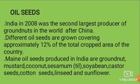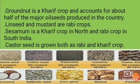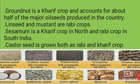India in 2008 was the second largest producer of groundnuts in the world after China. Different oil seeds cover approximately 12 percent of the total cropped area of the country. Main oil seeds produced in India are groundnut, mustard, coconut, sesame, soya bean, castor seeds, cotton seeds, linseed and sunflower. Groundnut is a Kharif crop accounting for about half of the major oil seeds produced. Linseed and mustard are Rabi crops, sesame is a Kharif crop in the north and Rabi in south India, and castor seed is grown both as Rabi and Kharif crop.